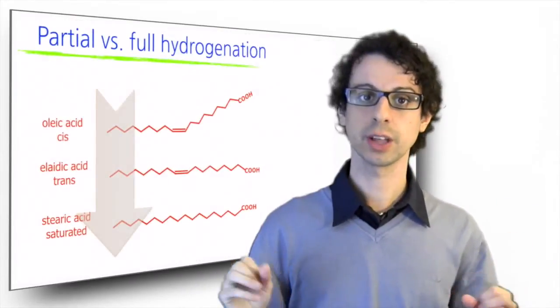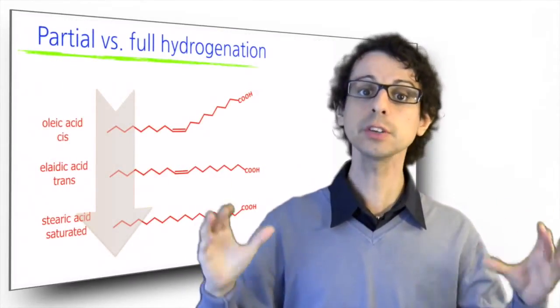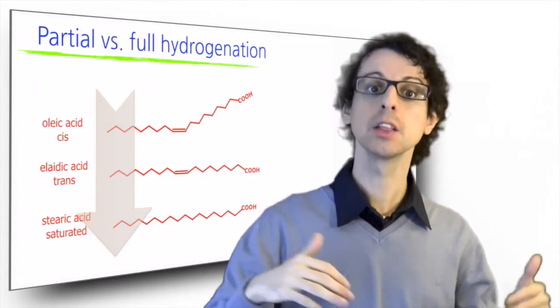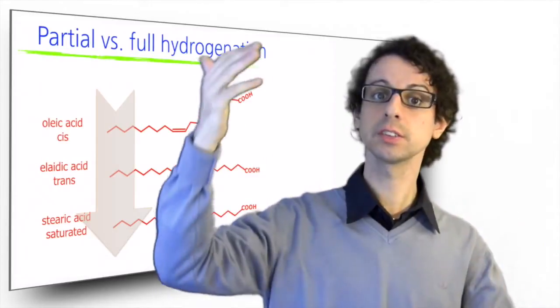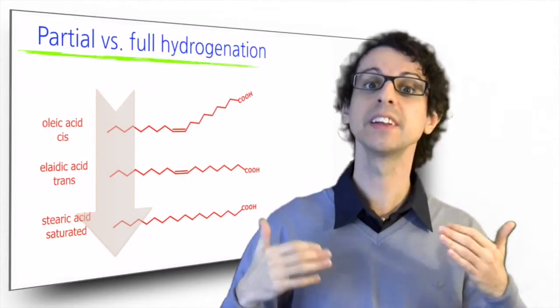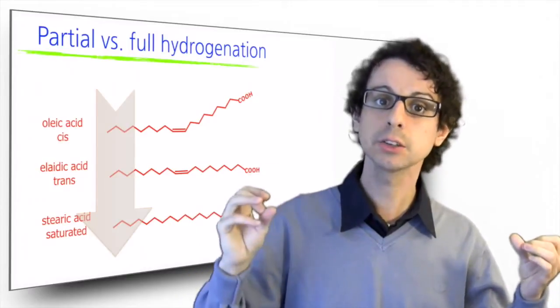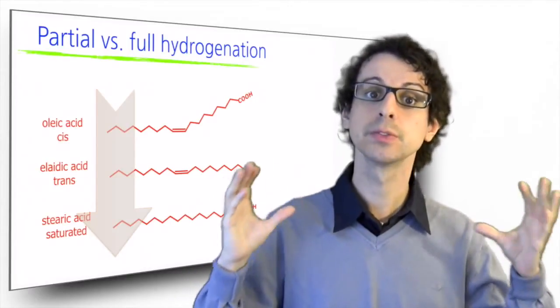During the process of hydrogenation, unsaturated fats are first converted from their natural cis form, that is bended, to the trans form. So one hydrogen crosses to the opposite side of the bond, and the chain becomes linear. Then the remaining hydrogens can bind to the carbon, so that the fat becomes fully saturated.